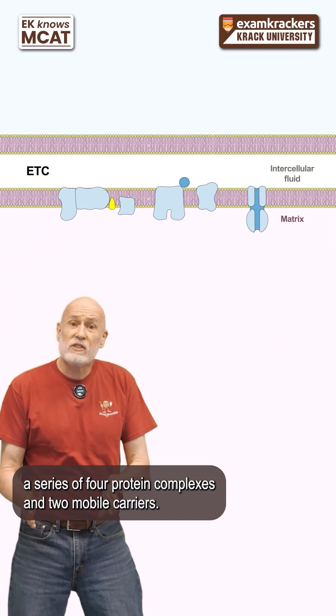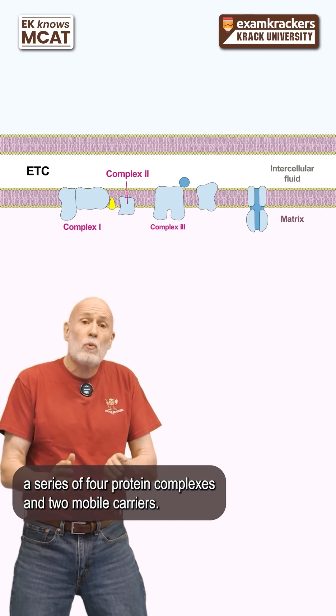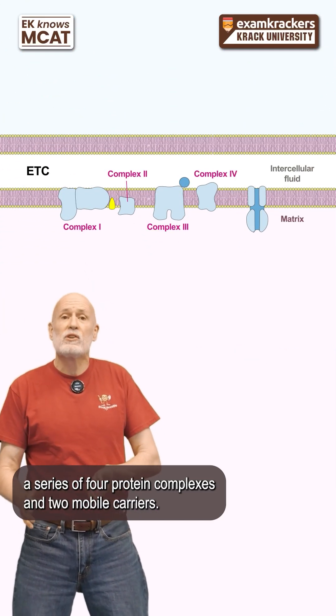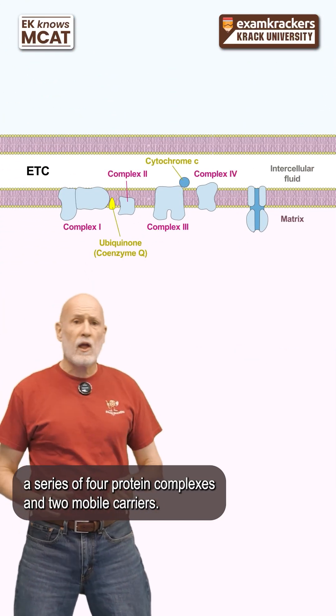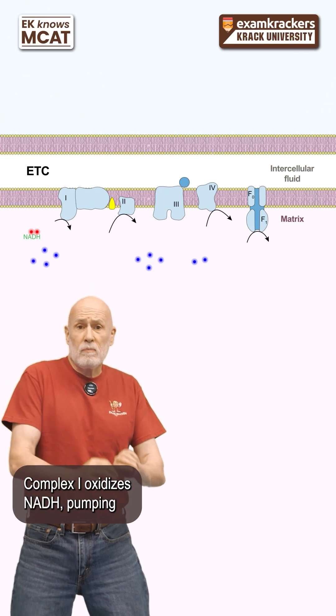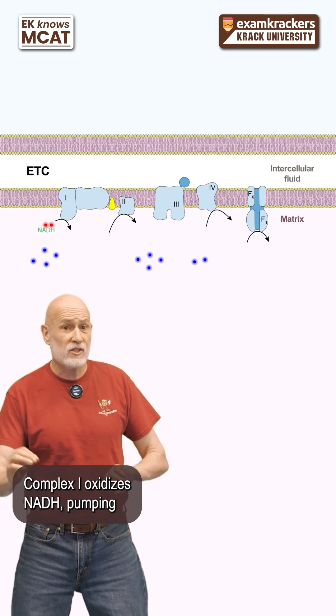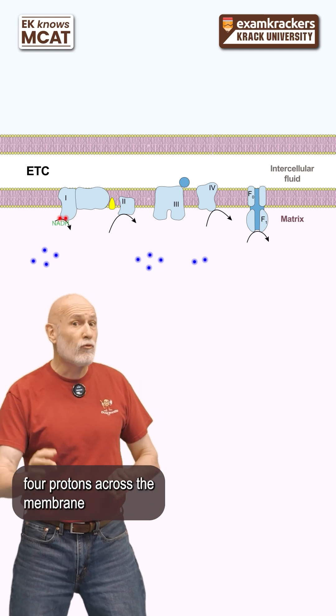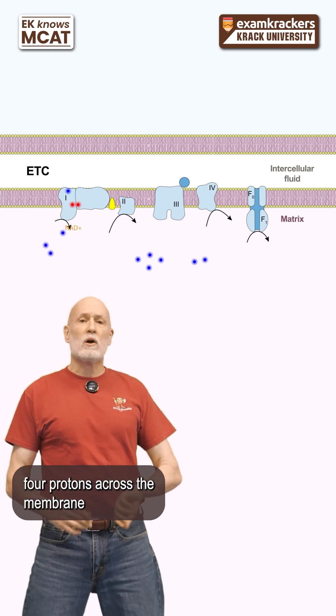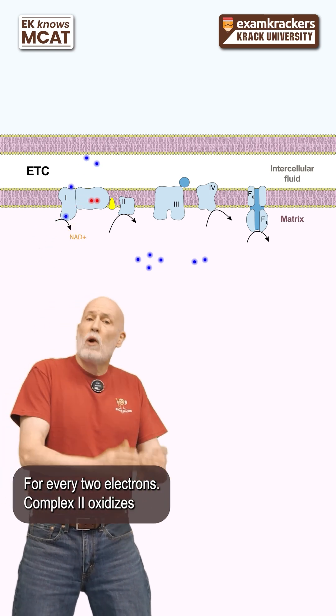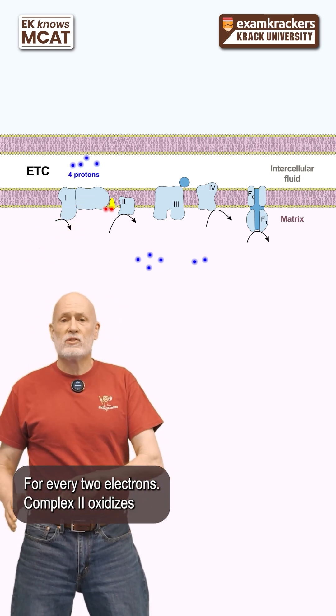The ETC consists of a series of four protein complexes and two mobile carriers. Complex 1 oxidizes NADH, pumping four protons across the membrane for every two electrons.